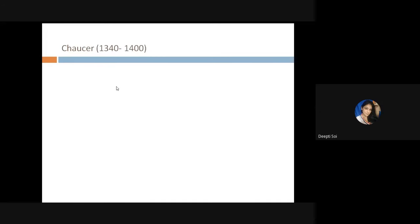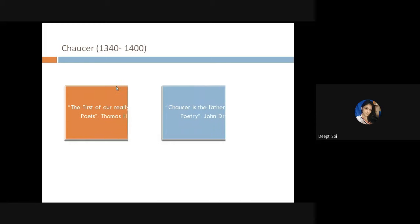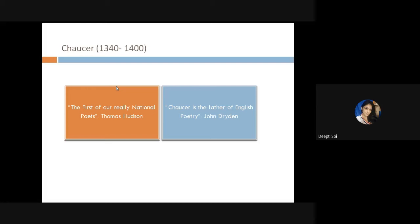Let's begin by looking at what other poets have remarked about Chaucer. Thomas Hudson described him as 'the first of our really national poets,' and John Dryden considered him — as we still do — the father of English poetry. Many historians consider Chaucer as the real starting point of English literature.